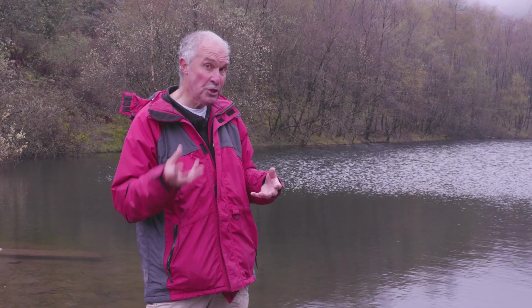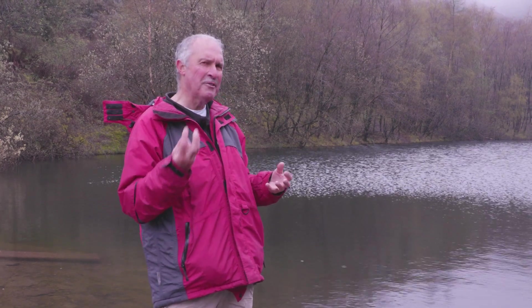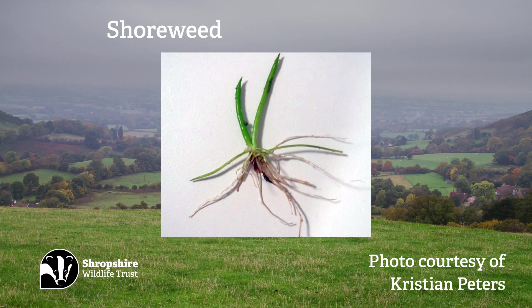The other one, shoreweed, sort of looks like a spiky grass that lives underwater — it sticks up a bit like tiny little cactuses. But unlike a grass, instead of having a flat blade they're little cylinders, so if you can reach a bit just pull it up and check if it's a cylinder or a flat blade.